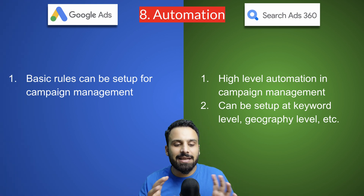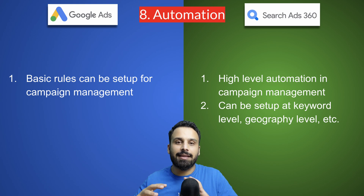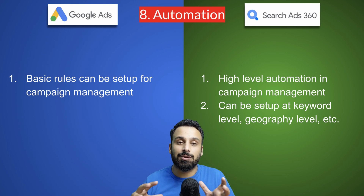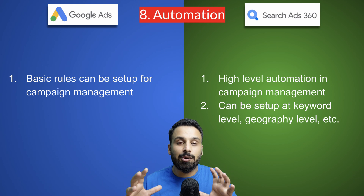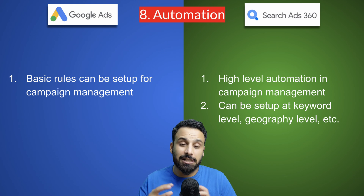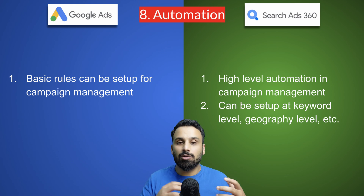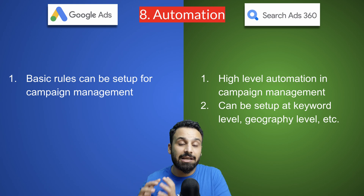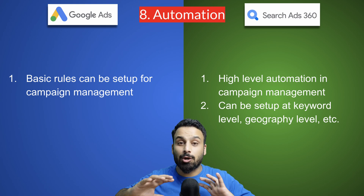The final difference is automation. In Google Ads, you can set up basic rules — for example, increase a bid under a certain condition, stop a campaign, or send an email alert. In Search Ads 360, the automation available is far more advanced. Google Ads automations are available at the ad group and campaign level, whereas in Search Ads 360 they are available at the keyword level as well, and can be applied across all search engine marketing platforms you are using. If there are any other differences not covered here, feel free to add them in the comments.